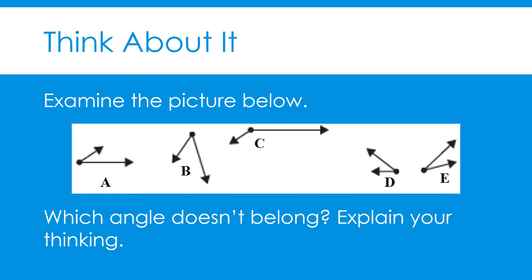Think about it. Examine the picture below. Which angle doesn't belong? Explain your thinking. I noticed that angle C doesn't belong with the rest of the angles. Angles A, B, D, and E all have small angle measures — they are only rotated or open a little bit, with a measurement less than a right angle. Angle C has a large angle measure; it is open or rotated a lot, with a measurement greater than a right angle. We will learn what to call each of these angles in today's lesson.